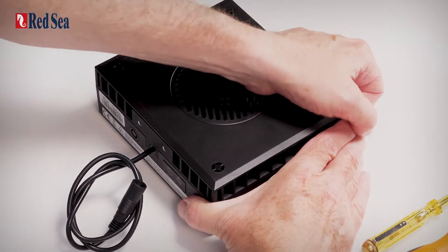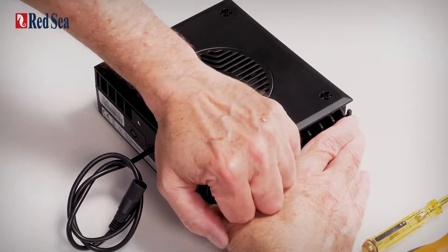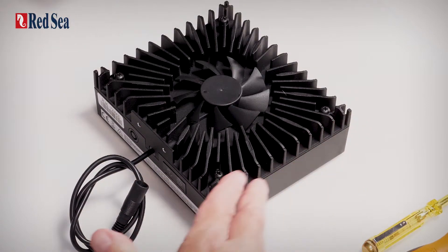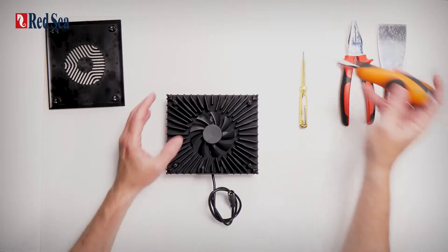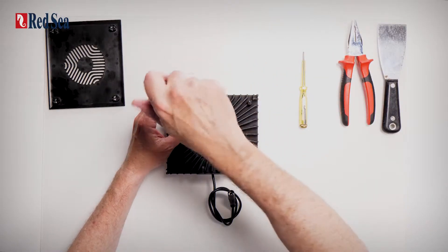Firstly, remove the top cover by clicking it in the corners and place that on one side. Then we are going to remove the four screws.